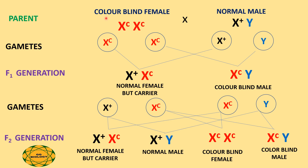The second type of marriage is between a colorblind female and a normal male. The female has two recessive genes on both X chromosomes (XcXc), making her colorblind, whereas the male has the dominant gene on his X chromosome and is normal. The female produces gametes of the same type Xc, and the male produces gametes X+ and Y. Fertilization produces X+Xc — a normal carrier female — and XcY — a colorblind male. Thus in F1, all females are normal carriers and all males are colorblind.